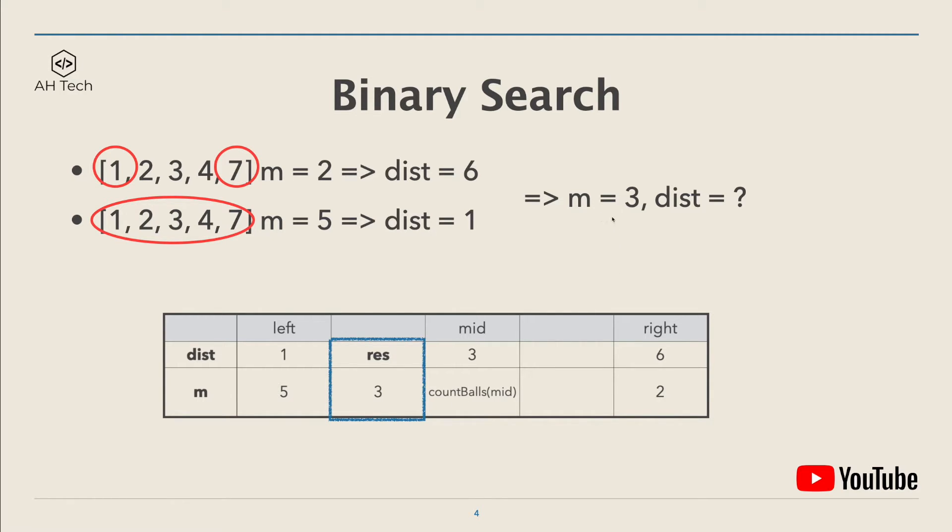The question now becomes: if count balls returns 3, which is the input of the question, then what is the largest minimum distance in this case? It will be more clear to see this in the code in action.